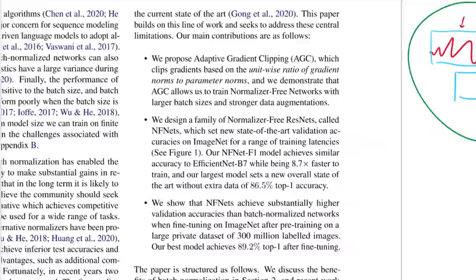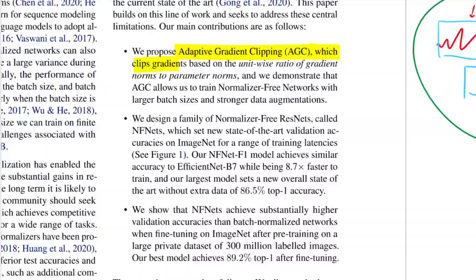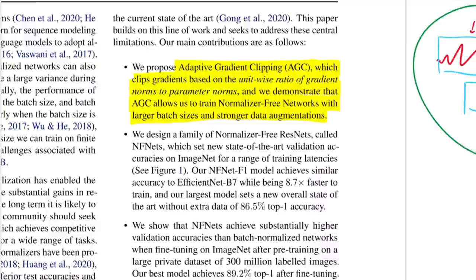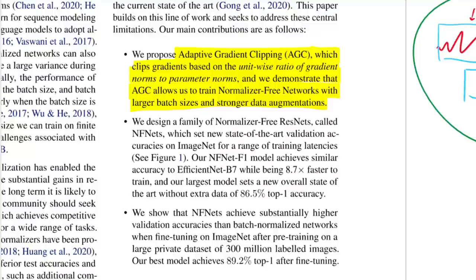They propose adaptive gradient clipping (AGC), which clips gradients based on the unit-wise ratio of gradient norms to parameter norms. They demonstrate that AGC allows training normalizer-free networks with larger batch sizes and stronger data augmentations. This adaptive gradient clipping is a pretty simple idea that should be implementable in pretty much any network, and has the potential to become a staple component in deep learning.